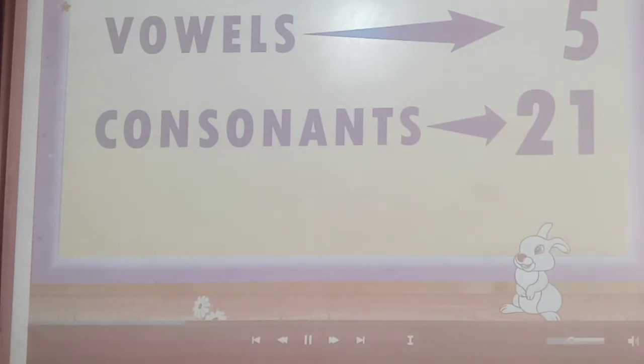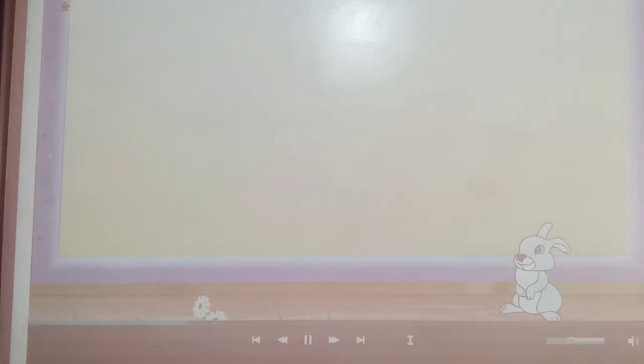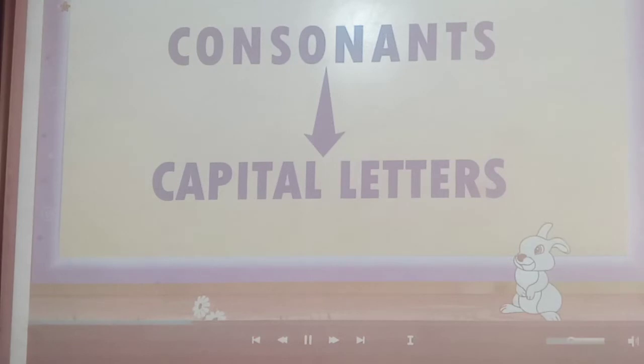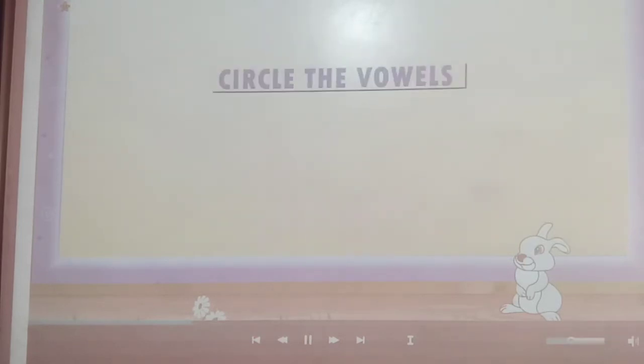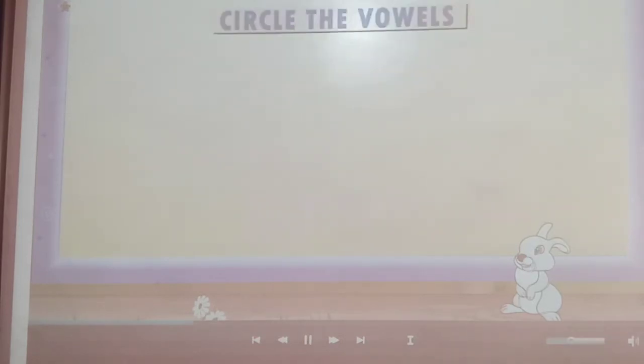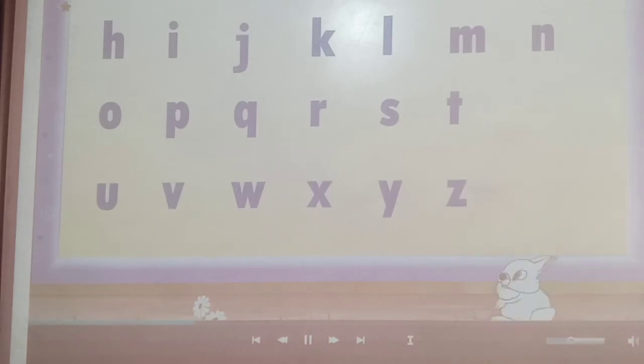Rainbow, you have seen vowels and consonants in the capital letters. Can you circle the vowels in the small letters? A, E, I, O, U. Very good. That was very quick. You are a fast learner.